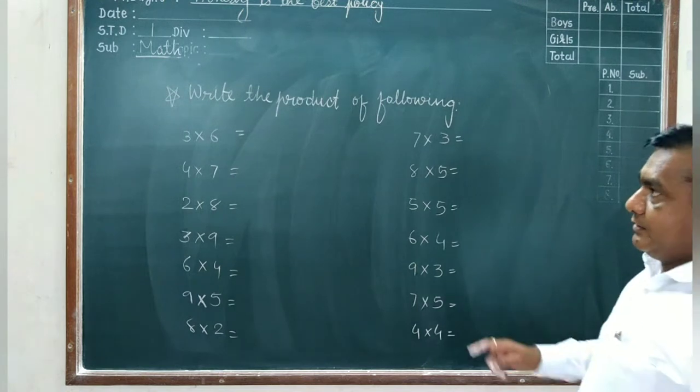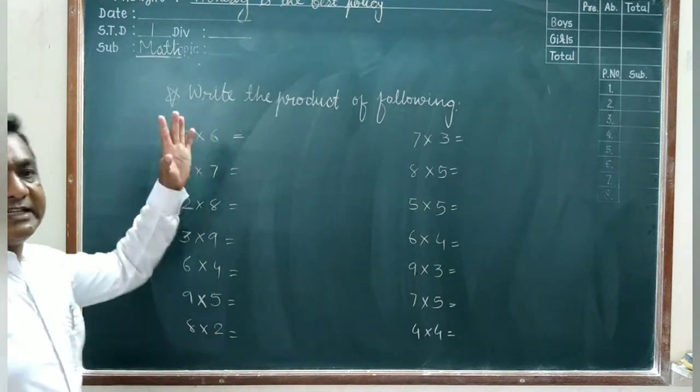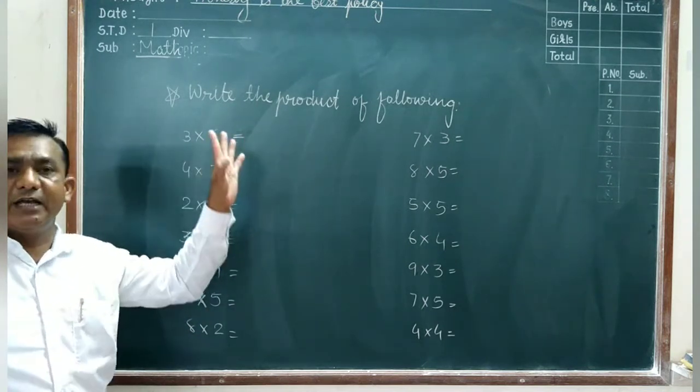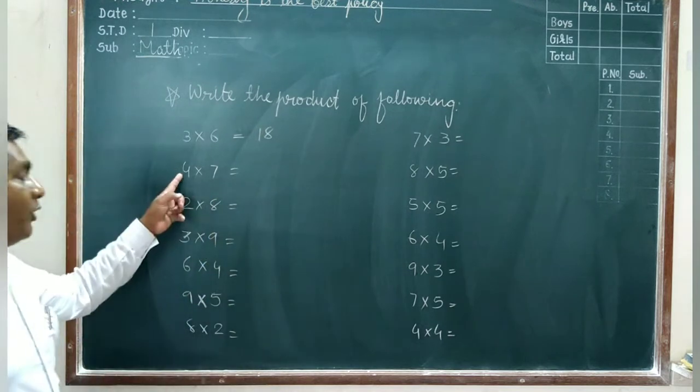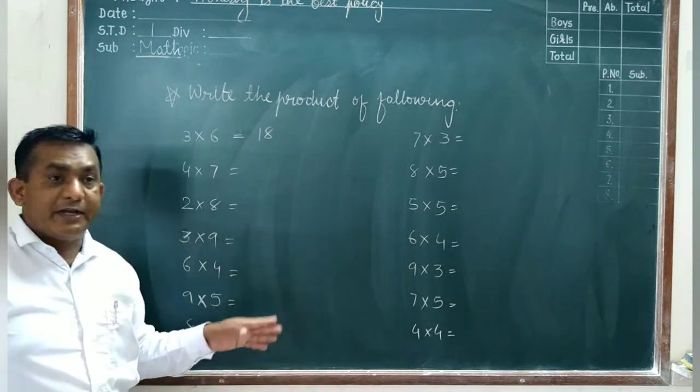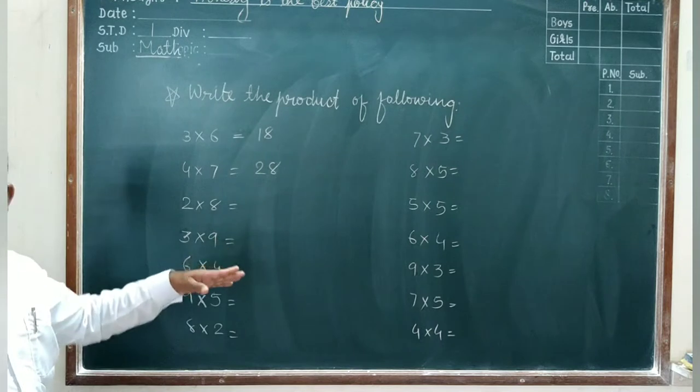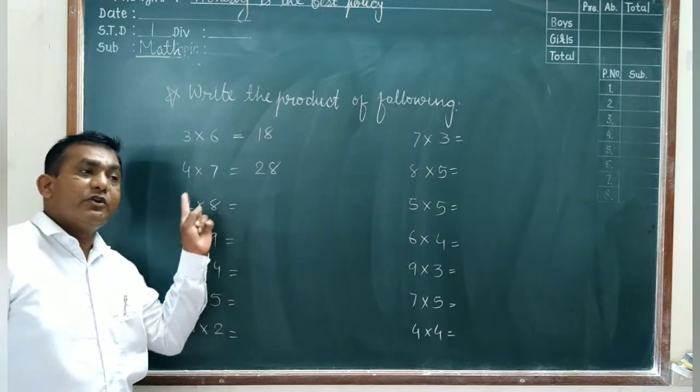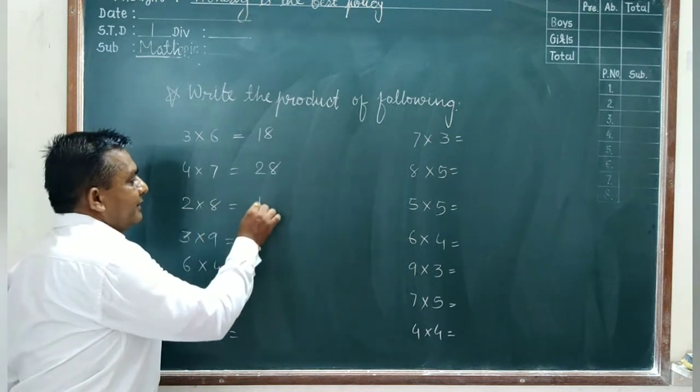Now you see here that question. Write the product of following. 3 sixes are, so you speak table 3 and write the answer. Here also 3 times 6 means 3 sixes are 18. So you write here 18. Here you see 4 sevens are. 4 sevens are 28. So you write here 28. Now 2 eights are. Also you speak same, 2 eights are 16.